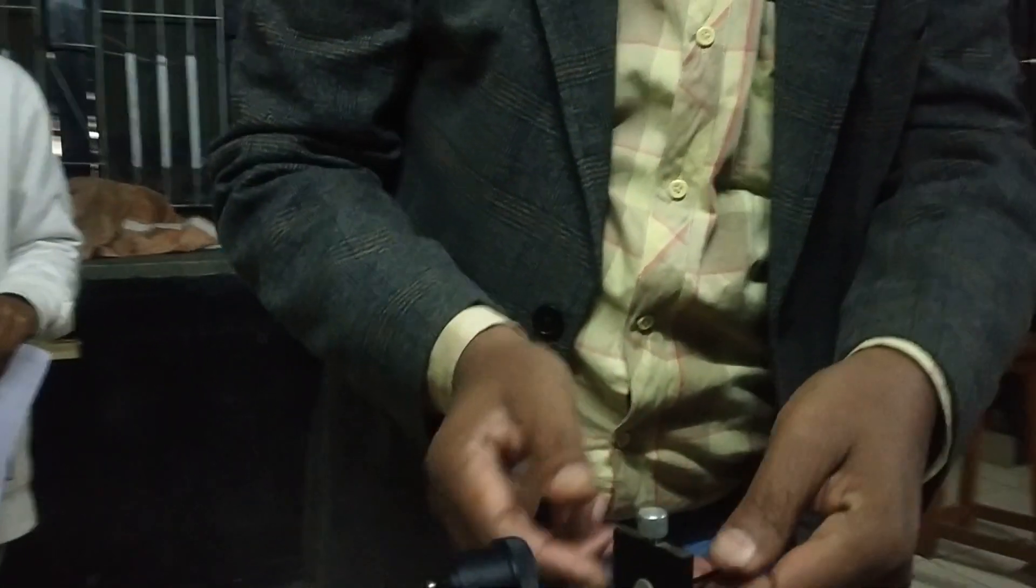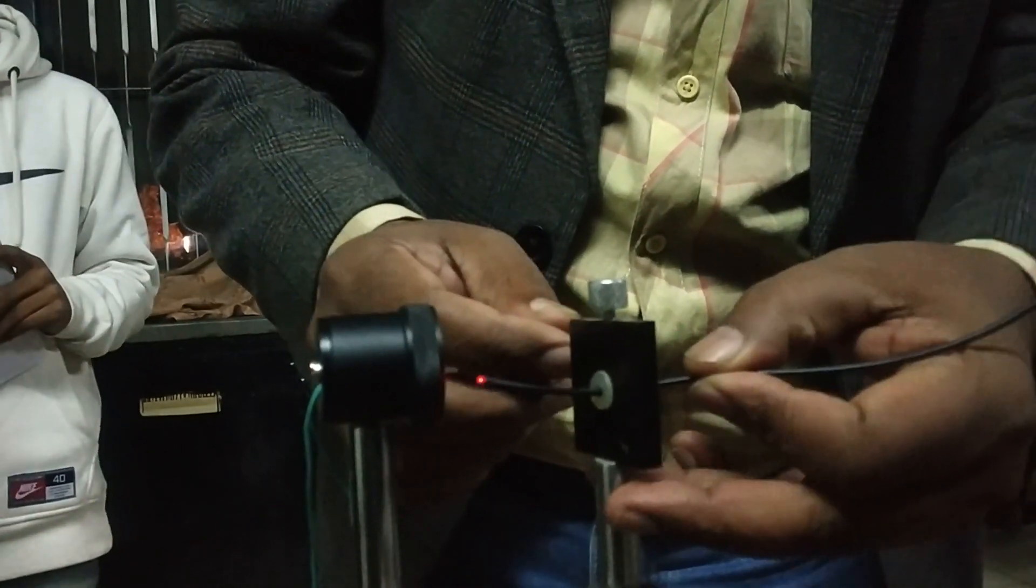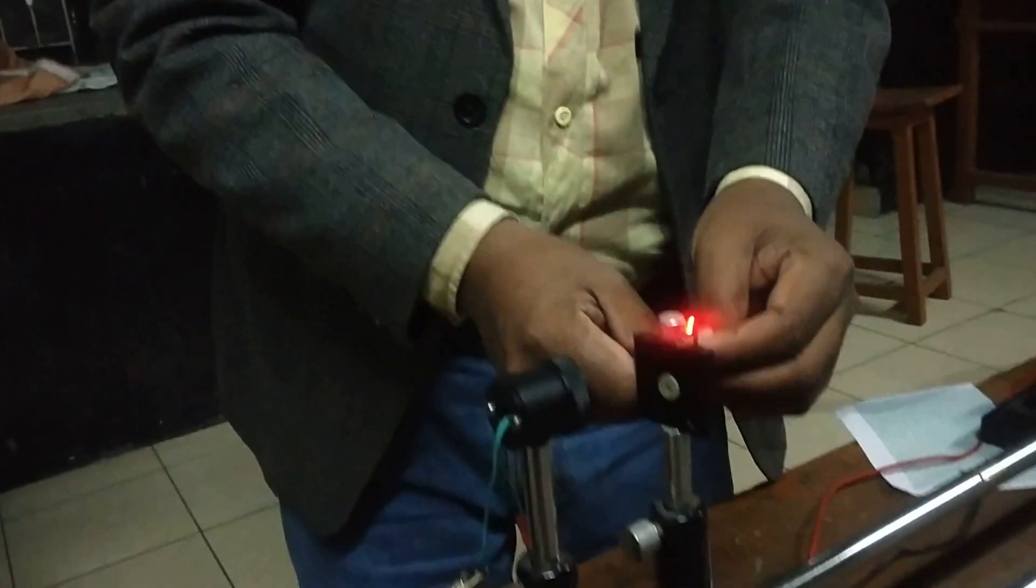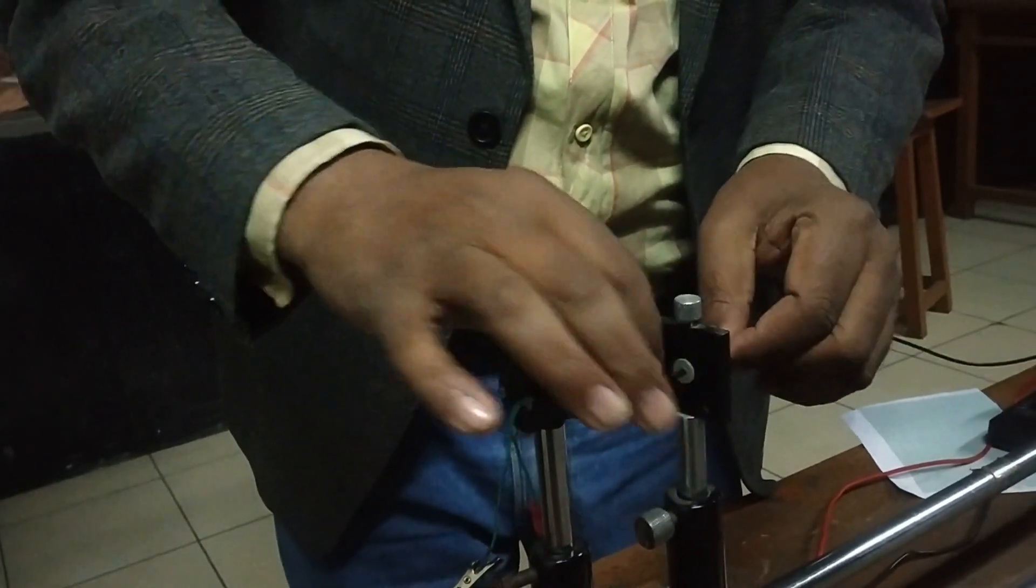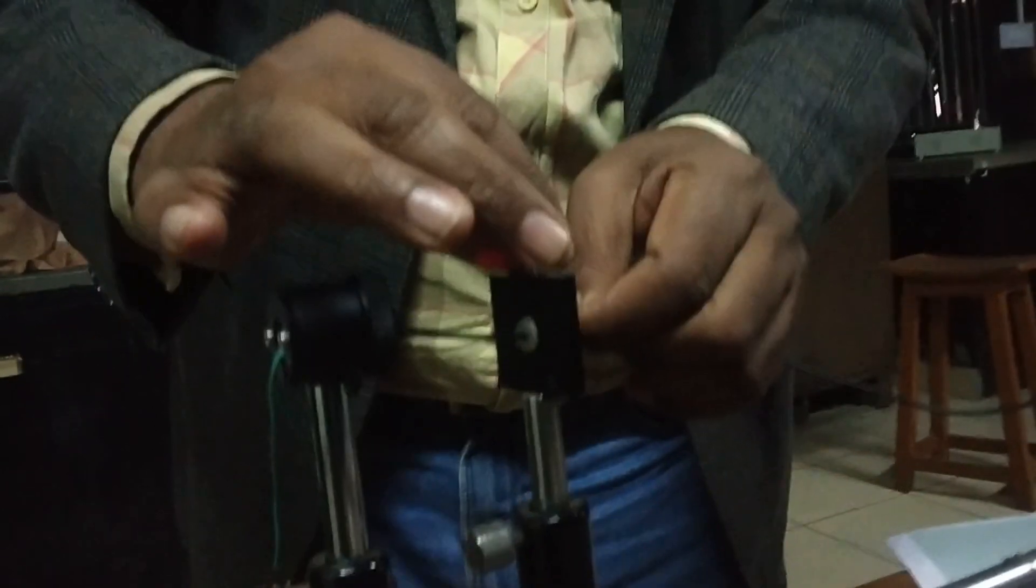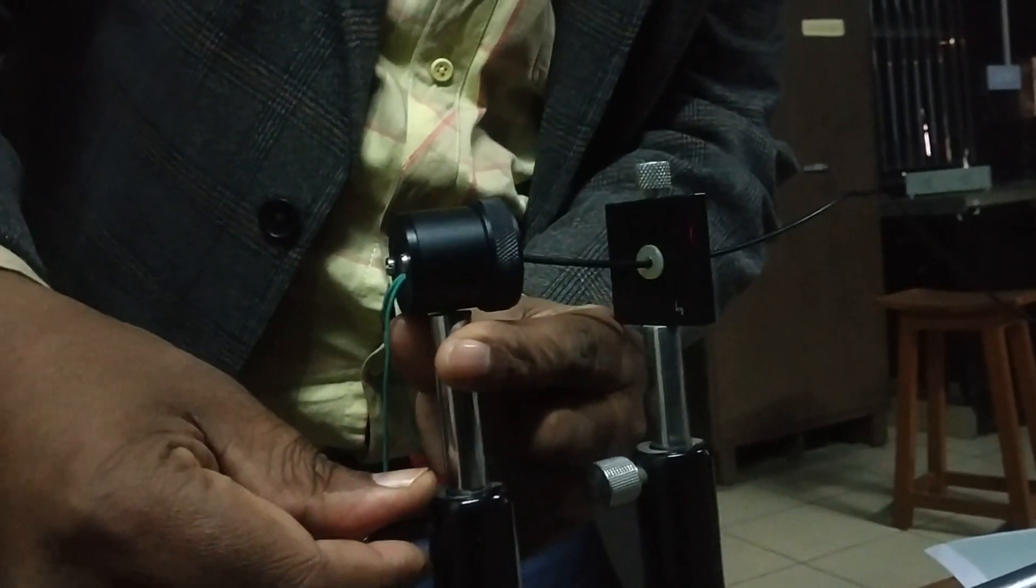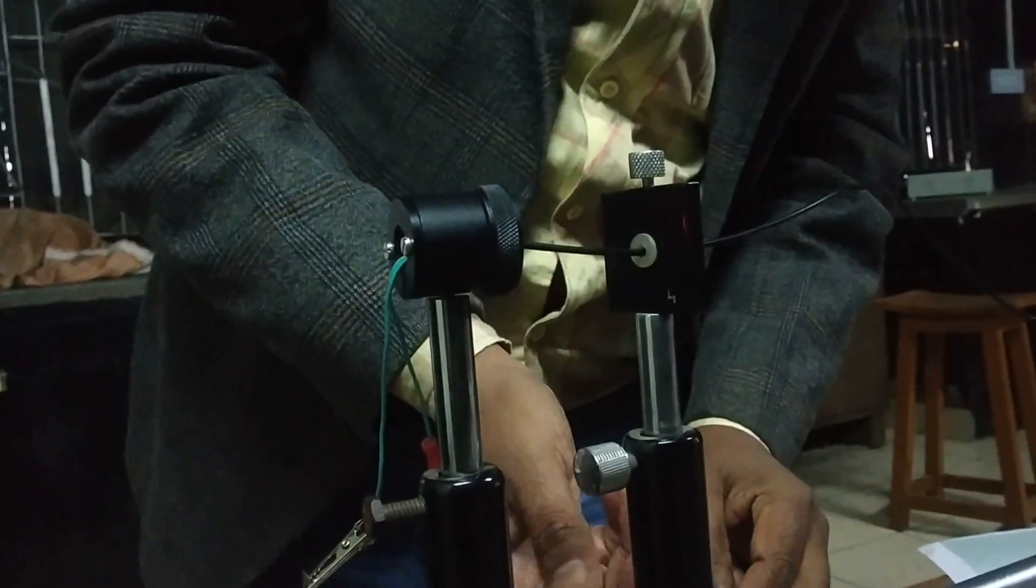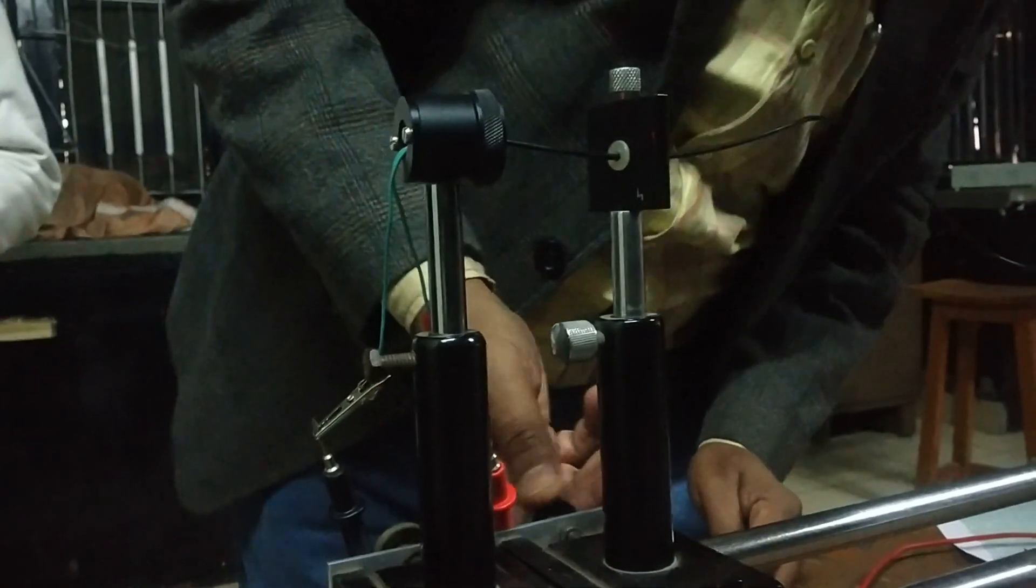So while doing this, we have to make sure that stray light does not fall into it. But because I have to videograph it, I cannot switch off lights, so these results will be just typical, not the exact results. Another thing you should know: for more sensitivity of the photocell, the light should preferably fall normally on the photocell.